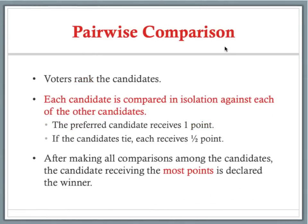In our next voting method, pairwise comparison, voters again rank the candidates, so we're using the whole preference table. Each candidate is compared in isolation against each of the other candidates — we pair them up and compare them head-to-head. The preferred candidate between the pair receives one point. If the candidates tie, each receives half a point. After making all comparisons, the candidate receiving the most points is declared the winner.